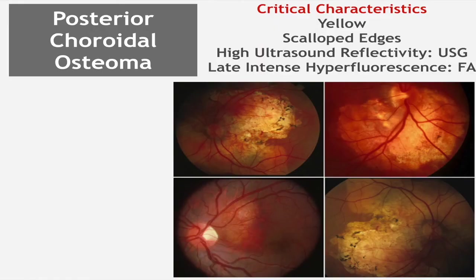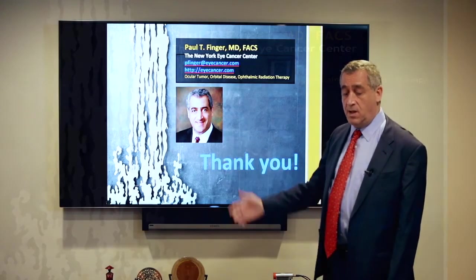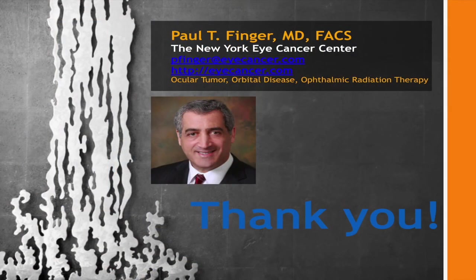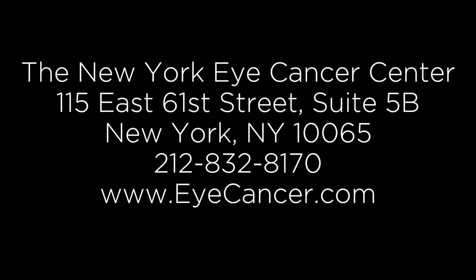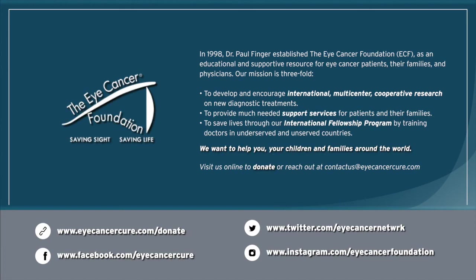Critical characteristics of osteoma include that they're yellow with scalloped edges, high internal reflectivity, and late intense hyperfluorescence on fluorescein angiography. If you have any questions, give us a call or visit eyecancer.com where there's a full online text and atlas available. Thank you for your attention, and thanks to the Eye Cancer Foundation who supported much of the research presented and their committed support for international multicenter cooperation in ophthalmic oncology. Thank you and have a nice day.